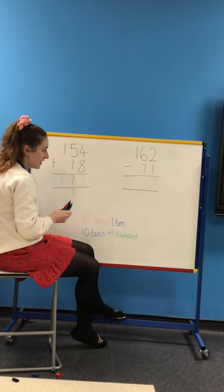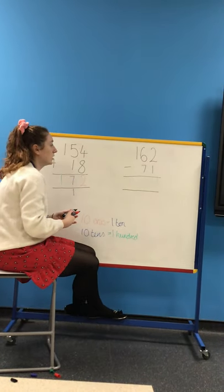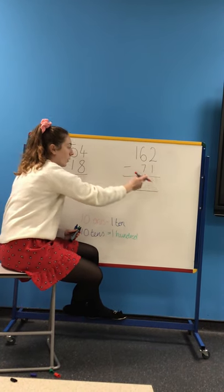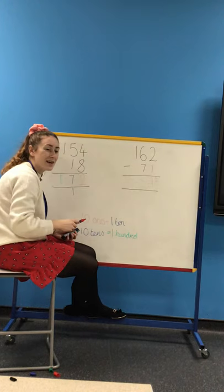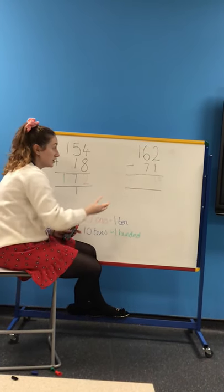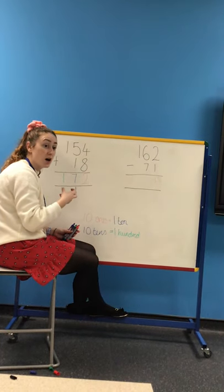Now, for subtraction on this side, we start by doing the 2 minus 1, that gives us 1. Then we have a look, 6 minus 7. Now we cannot do 6 minus 7, so what we're going to do is we are going to borrow, or we're going to exchange from the hundreds column.